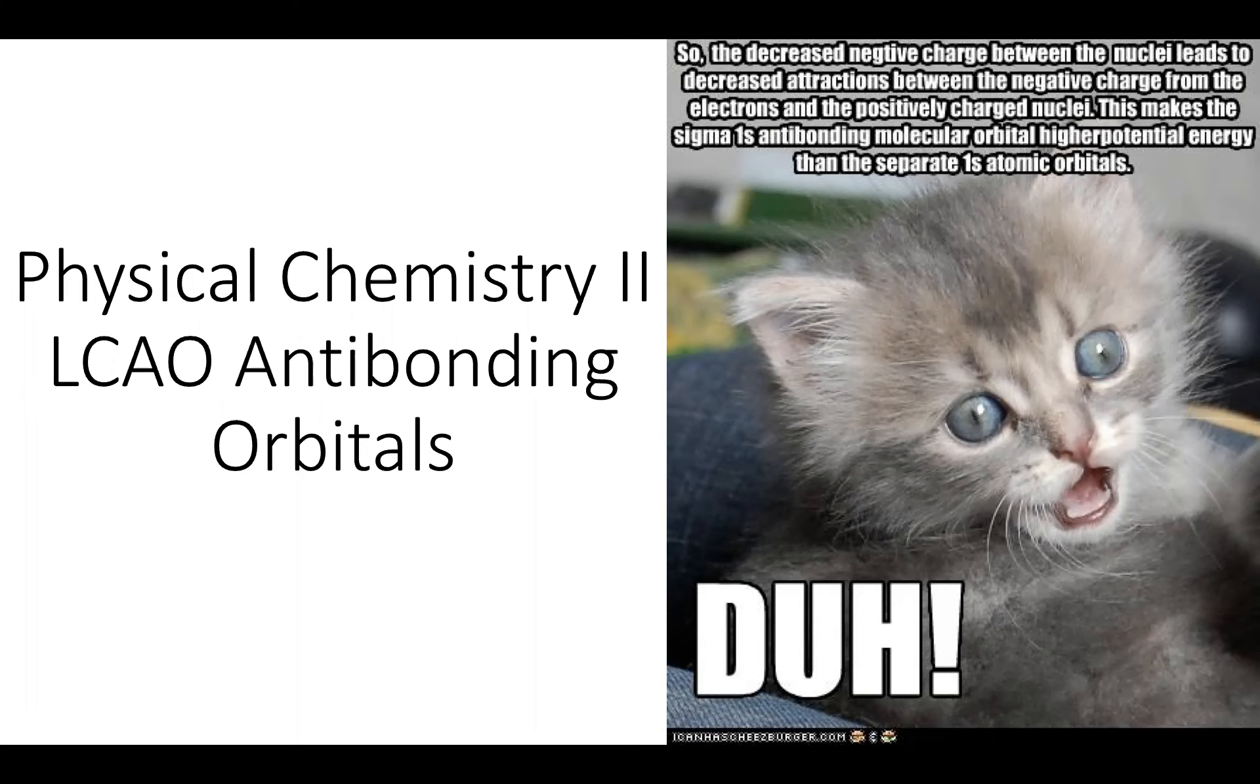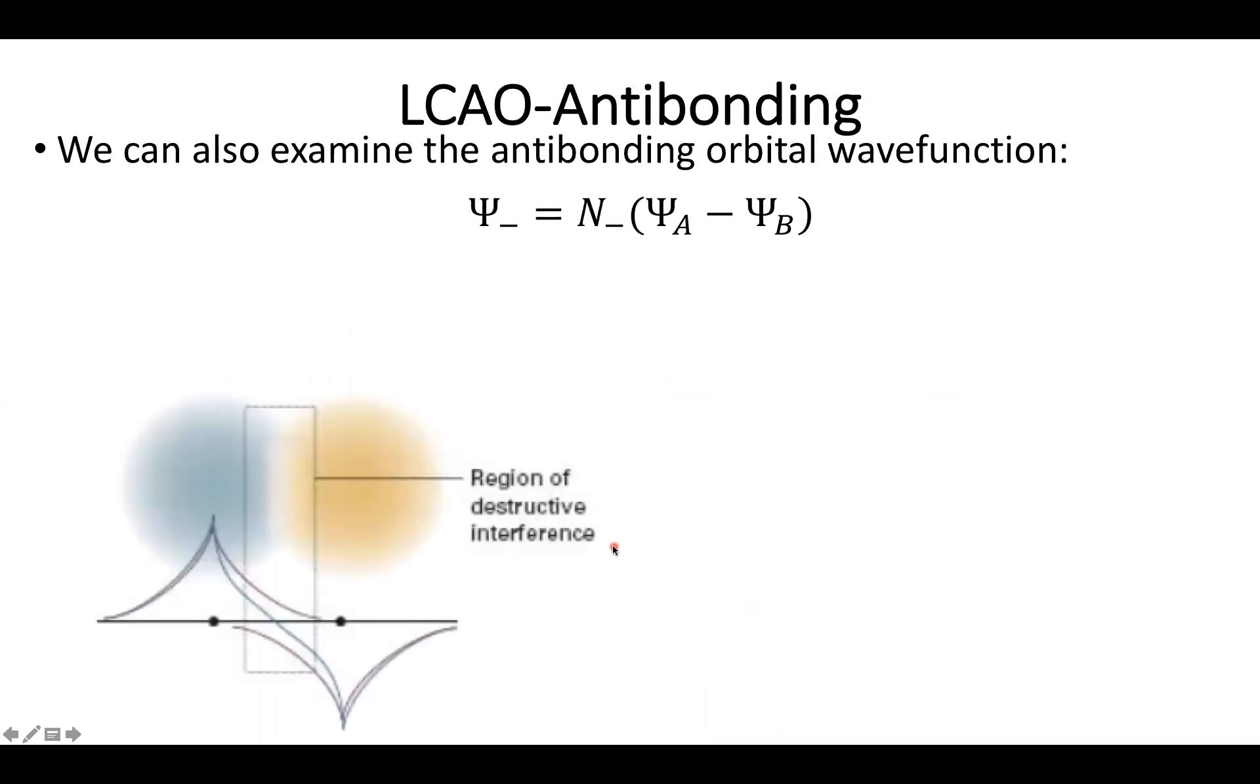But it turns out if something goes down, something else has to go up. And in that sense, we bring you our antibonding orbitals. Our antibonding orbitals are the asymmetric combination of a 1s hydrogen orbital centered around atom A, and then we subtract out the wave function for the 1s hydrogen orbital centered around B. This produces a wave function where we annihilate some of the wave function character in the middle.